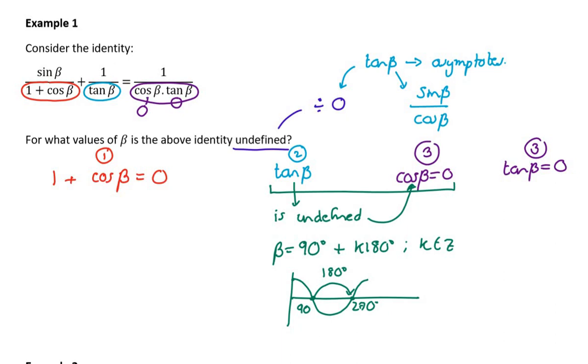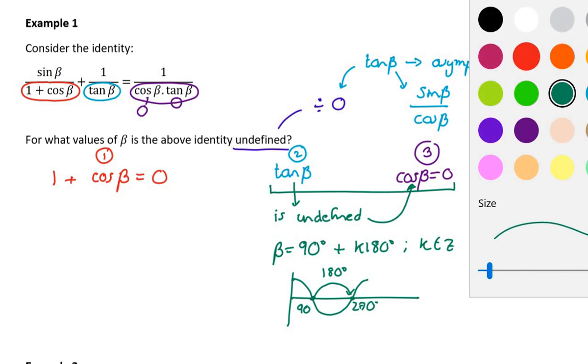So again, if you're looking at a memo for this type of question in an exam, don't think that your answer is wrong just because it doesn't look like the memo. 90 plus k180 is a condensed version of 90 plus k360 and 270 plus k360. Try to not waste time on solving things that you don't need to solve. So try and connect those dots of tan beta and cos beta being 0 are related.